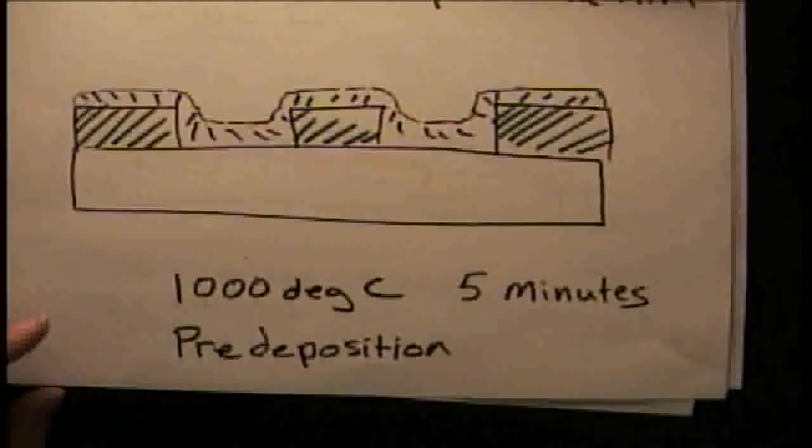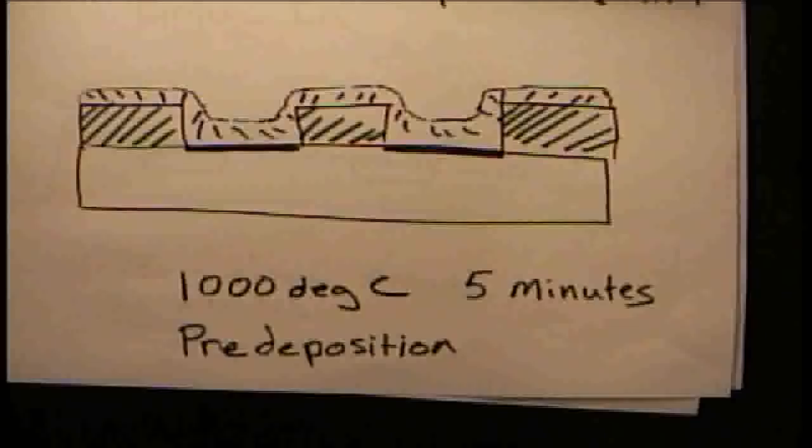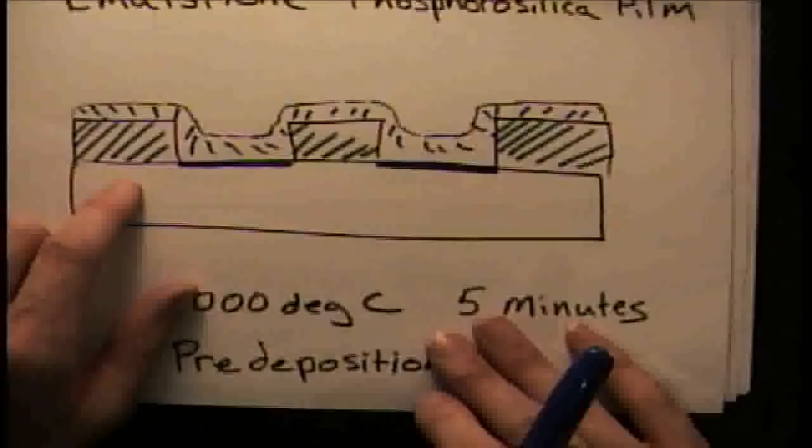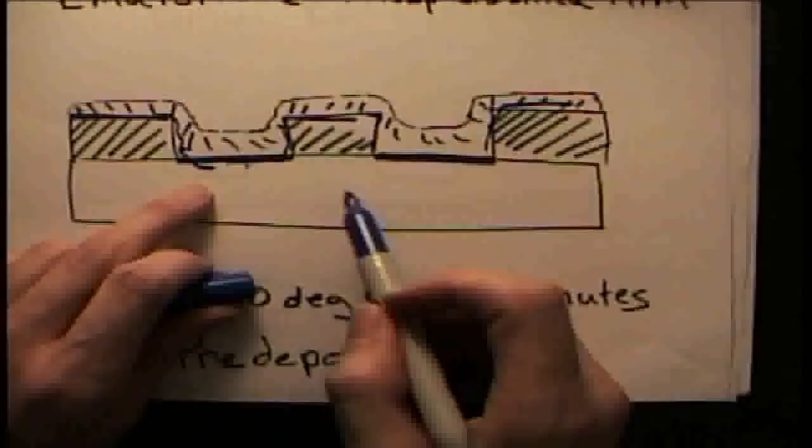The pre-deposition puts a very high concentration of phosphorus into the surface of the wafer. Then you'll take the wafer out of the furnace, let it cool down, and put it back into the acid. You'll etch away this film that was left behind. Again, you'll know that you've etched all the way through when the water starts beading up in the active areas again and doesn't wet across.